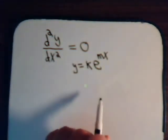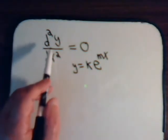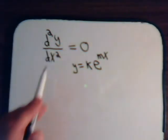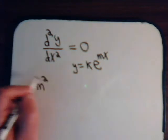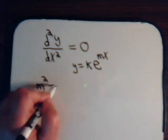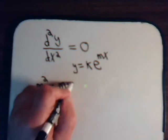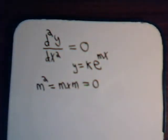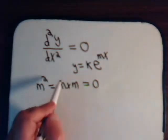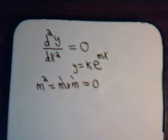We write our auxiliary equation. And we do that by replacing the differential. Here it's a second-order differential, so we have m squared, or that's m times m equals zero. So obviously m equals zero. But notice we have two m's. This one can be zero, and this one can be zero. So we have a repeated root here.